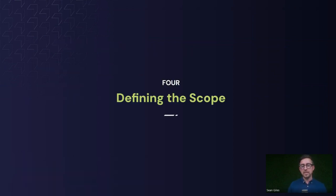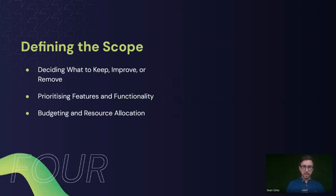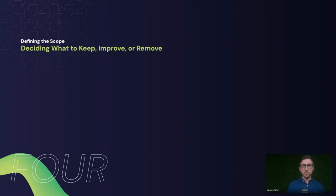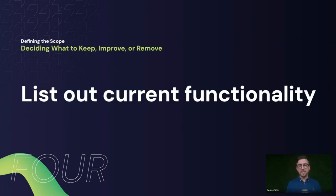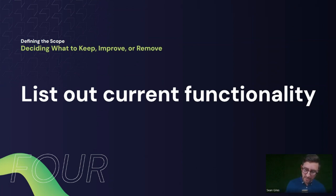Point four is defining the scope. Here we're looking at deciding what to keep, improve, or remove; prioritizing features and functionality; and budgeting and resource allocation. The basic first step is to list out the current functionality of your existing website — what pages does it have, does it have a contact form, does it link to any third-party APIs, does it link to your CRM or a postcode lookup or use geolocation?